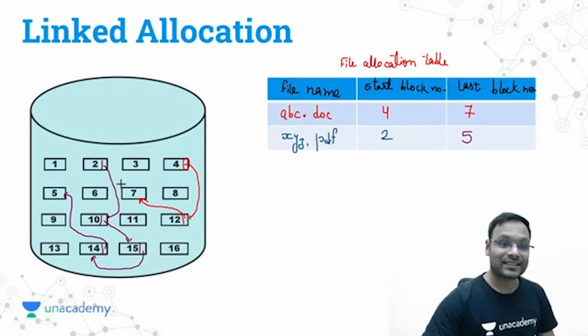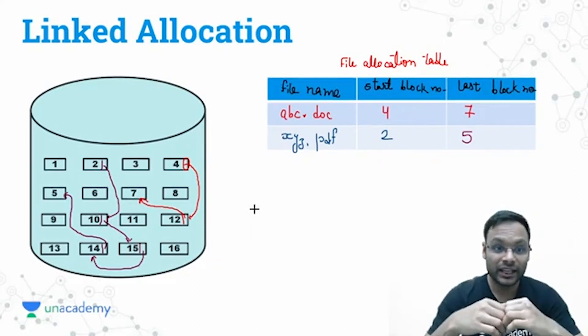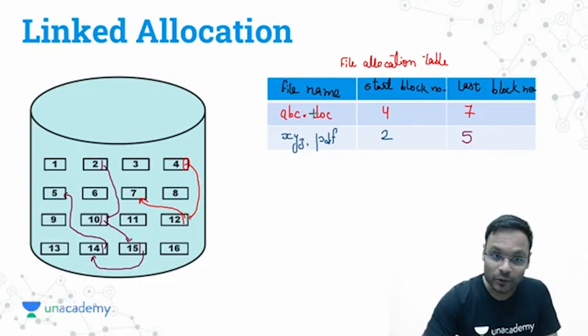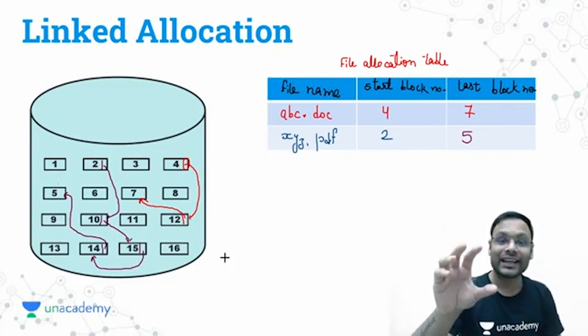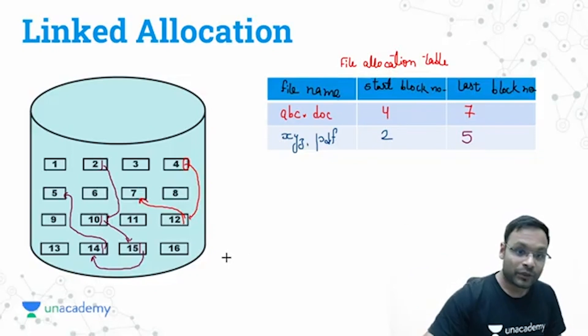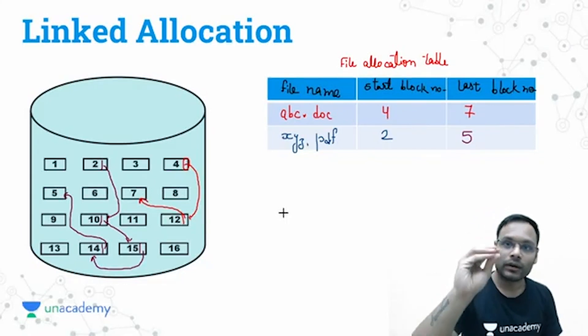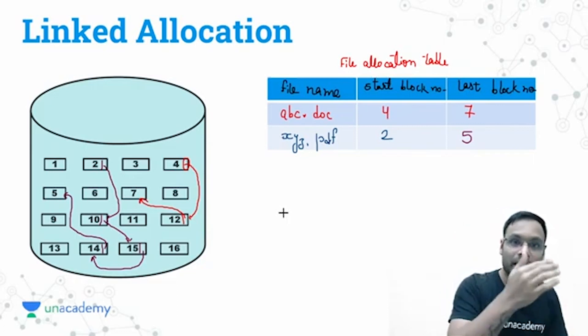Hence you can access the file easily. Now this particular linked allocation is better in flexibility. Let's say I want to increase the file size of this abc.doc. I do have so many blocks free: one, three, nine, thirteen, sixteen. Any block I can give to that particular file and from seven I can have that block a link easily. Hence I can have increment in the file size and my linked allocation will be flexible enough.